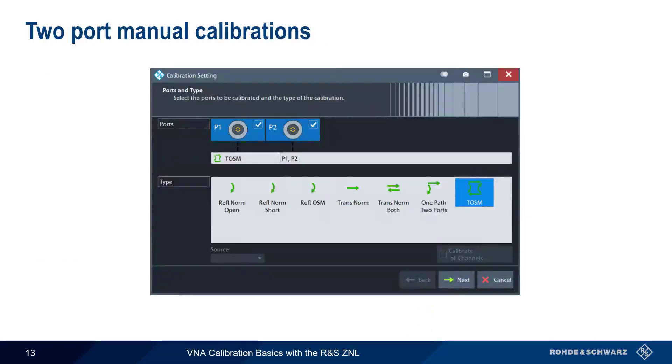As you should recall, there are a number of two-port or transmission calibration types, including normalization in one direction, normalization in both directions, one path two ports, and the full two-port through open short match calibration.